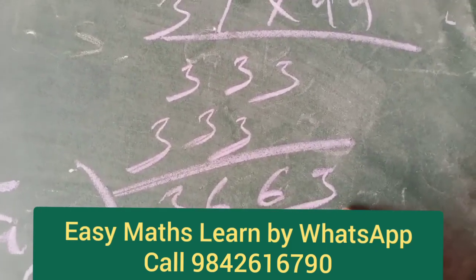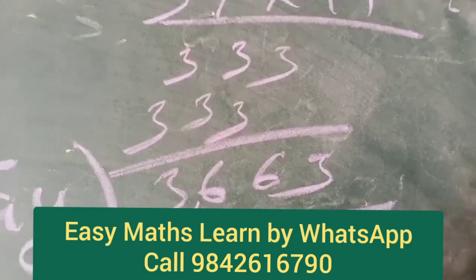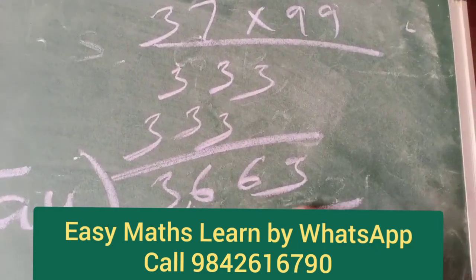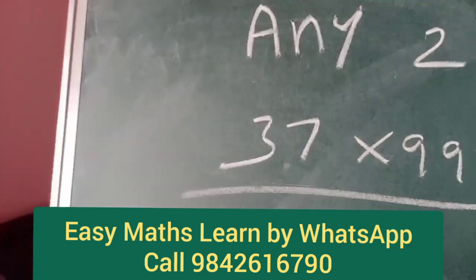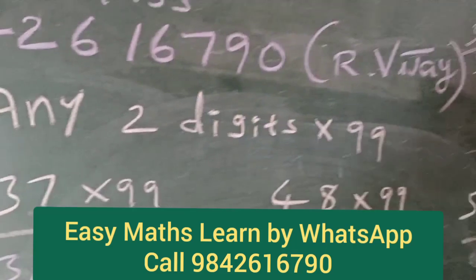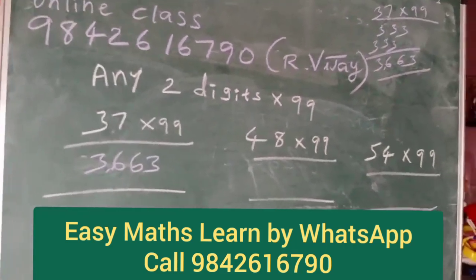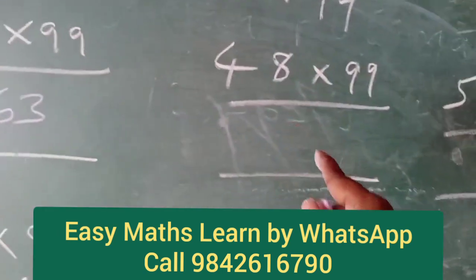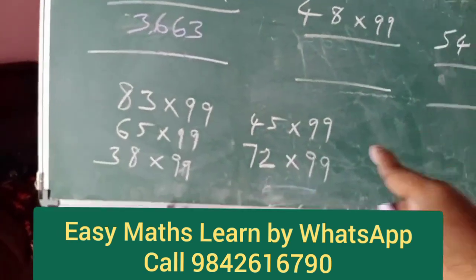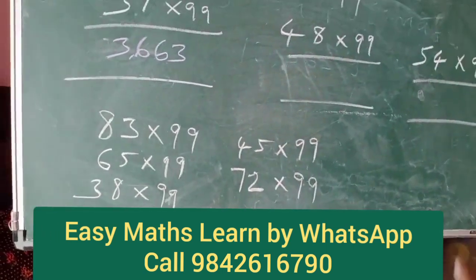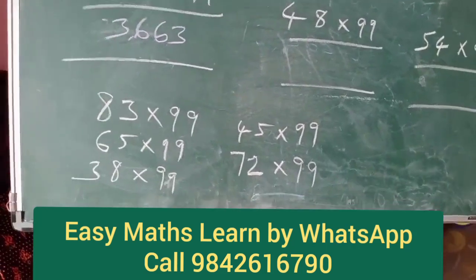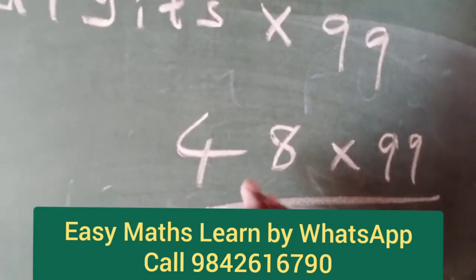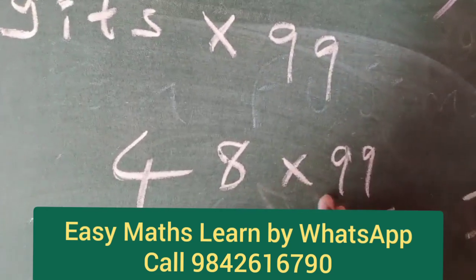That's why, if you have 1000, you can't use it in 3 digits. So, if you have 1000, 37 into 99 gives 3,663. Cut up. It's a trick — it's easy. You can use it. Okay, come on. 2,000. 2-digit number 99 into 10.